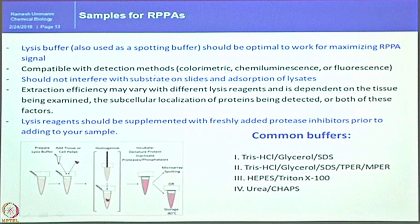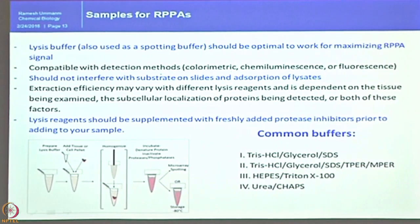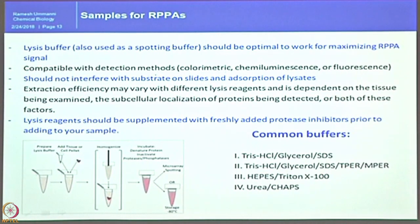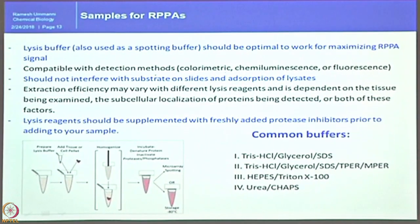To print the samples, a simple cartoon of sample preparation is: take a lysis buffer, add the tissue, homogenize, spin down the tube, take the supernatant, and proceed to printing — or store at minus 80°C and continue the next day. However, it is not as simple as that; multiple steps have to be taken care of, and you must plan the experiment and take all parameters into consideration before executing.